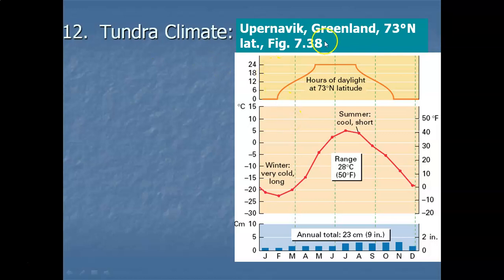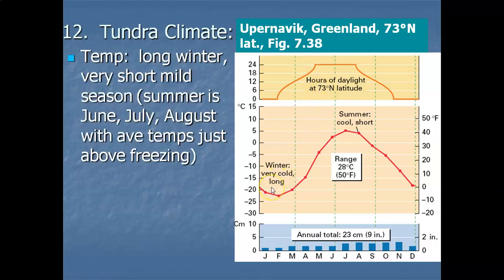We've got here a location in Greenland, a very high latitude location well above the Arctic Circle, and of course it's going to be the temperature regime that's very important at this high latitude location. Basically it's winter all year long, and there are three months that we call summer — June, July, and August — though I even hesitate to say the word summer, when you've got temperatures just averaging above freezing for three months. So it's kind of a short, mild season.